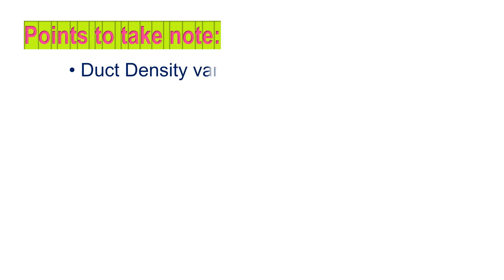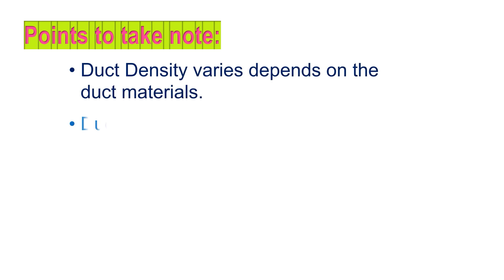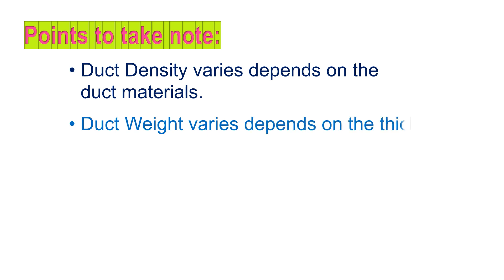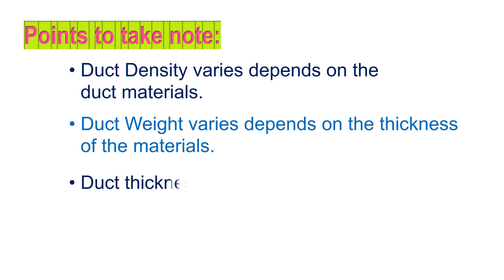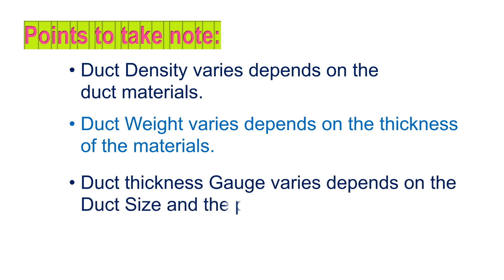Some points to take note: Duct density varies depending on the duct materials. Duct weight varies depending on the thickness of the materials. Duct thickness gauge varies depending on the duct size and the pressure class of the duct.